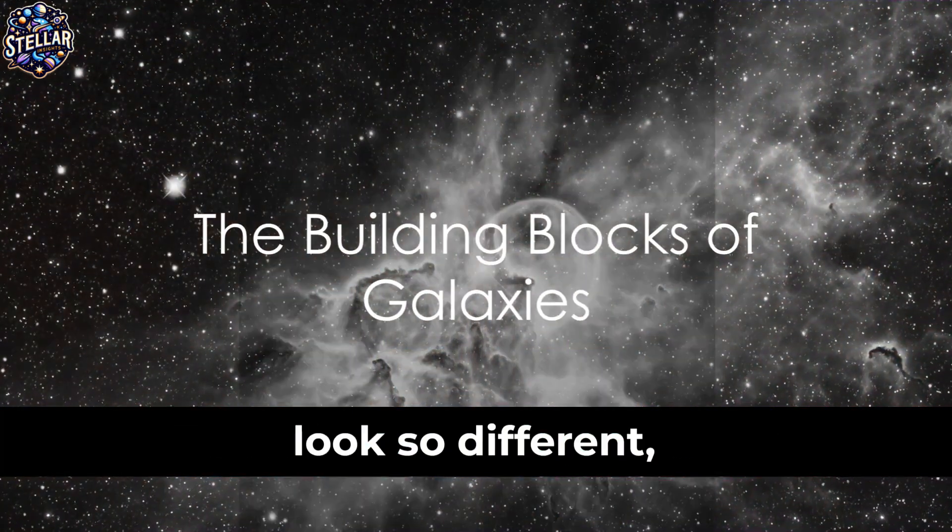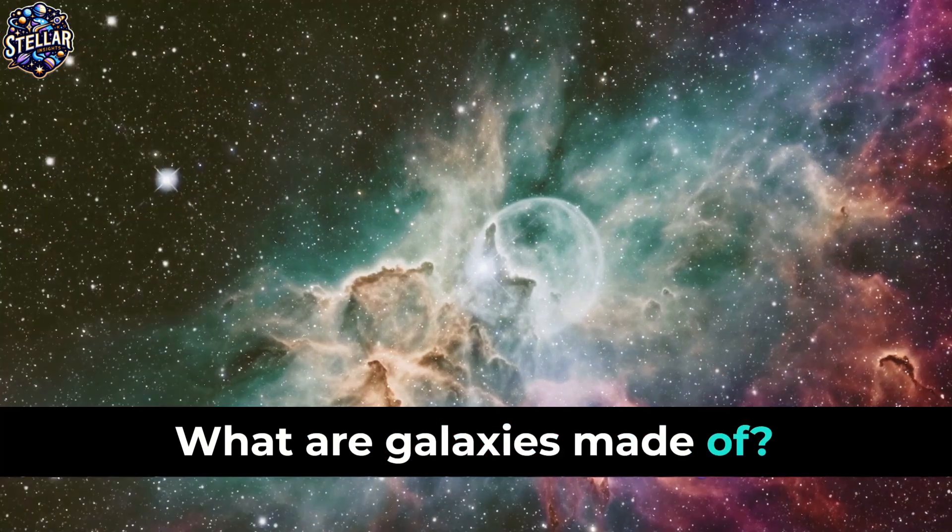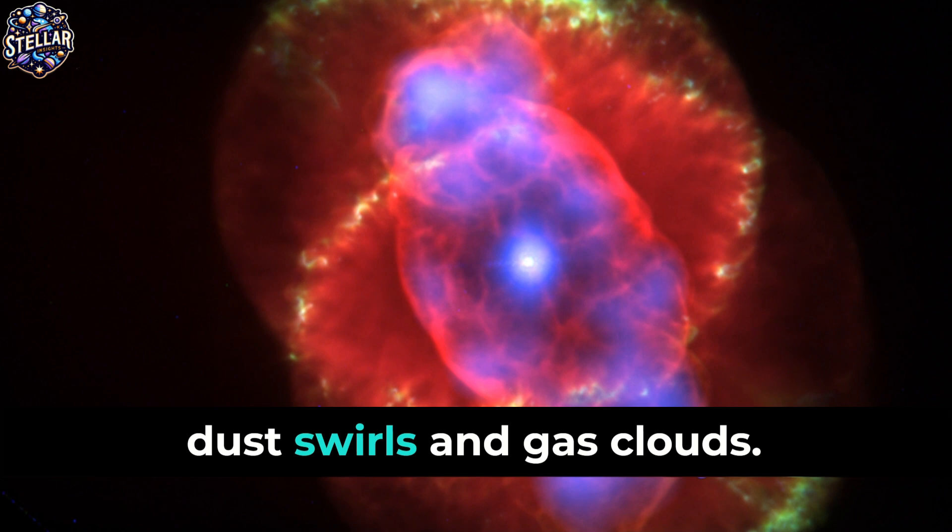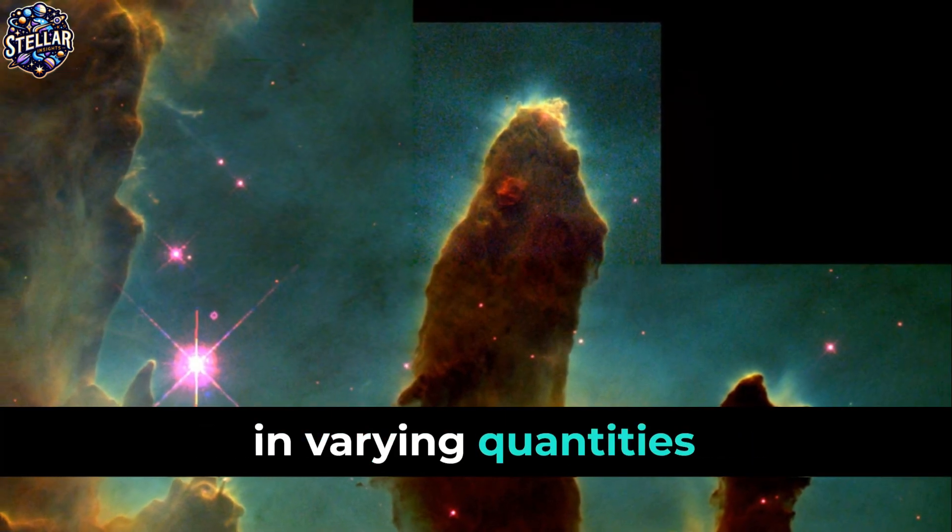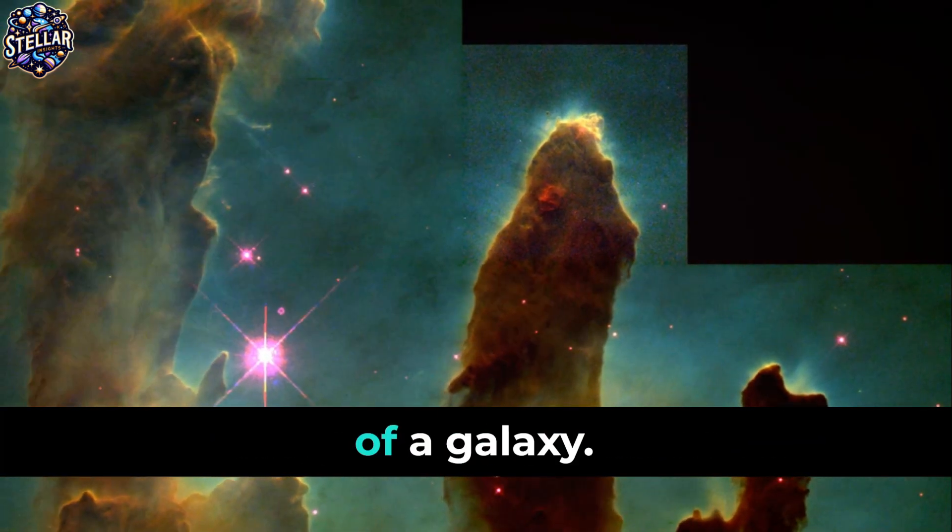To understand why galaxies look so different, we need to start with the basics. What are galaxies made of? At the heart of every galaxy, stars twinkle, dust swirls and gas clouds billow. These components in varying quantities and distributions are the primary ingredients that shape the appearance of a galaxy.